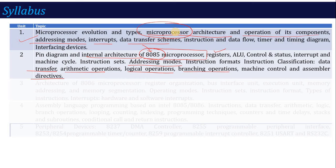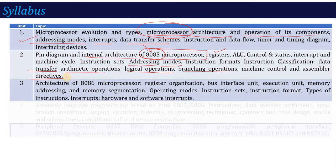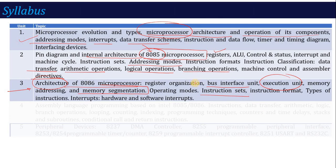In unit number three, similar to unit two, there is the 8086 microprocessor. You will first see its architecture, which has two main units: the Bus Interface Unit and the Execution Unit. After that, a key concept of the 8086 is memory segmentation — the memory is divided into different segments. So the main areas are the hardware architecture and then the instruction set or software part.